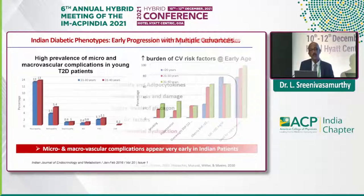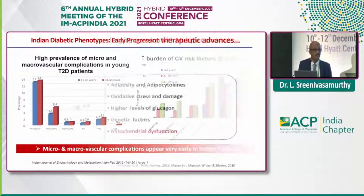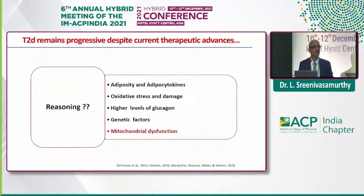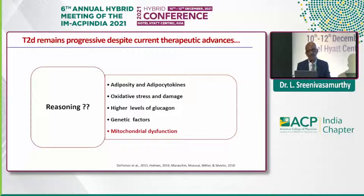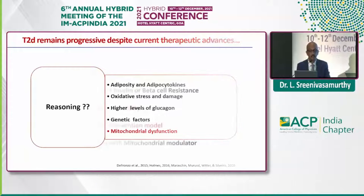So what is the reason? It is the progression of pathogenesis we are talking about today: adiposity, adipocytokines, oxidative stress damage, higher levels of glucagon, and genetic factors. Finding the mitochondrial dysfunction is what we are proposing as a new mechanism in the pathogenesis.